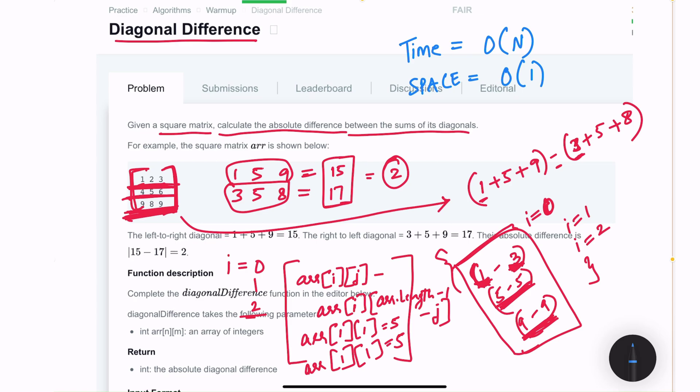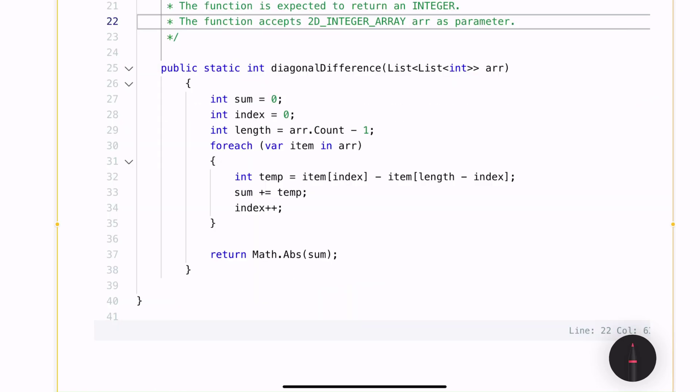Let me show you how this can be solved using C sharp. So here is my C sharp solution. I have three variables. One is the sum that will hold the result, the index and the length of the array. Then I start this for each loop and to calculate or to get the right values from the indexes, I have this item of index and then i minus item of length minus index. So if my i is equal to 0, I am looking at array of 0 comma 0 and then array of 0 comma 2. Once I calculate this temp, I am appending it to the sum and then incrementing my index. After this for each loop is complete, I will have the result in this sum and all I am doing is a math.absolute to get the absolute value and return it.